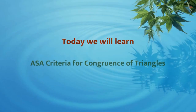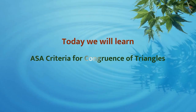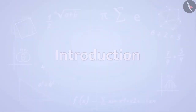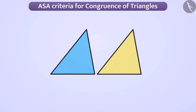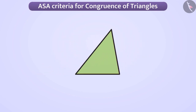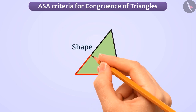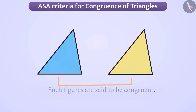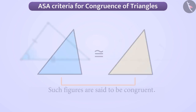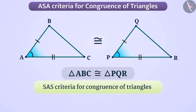Today we will learn about the ASA Criteria for Congruence of Triangles. When one figure is placed over the other in such a way that it covers the other figure completely and exactly, the two figures are of the same shape and the same size, and such figures are said to be congruent. In the previous video, we learnt the SAS Congruence Criteria of Triangles. Now we will understand the ASA Criteria for Congruence of Triangles.